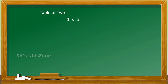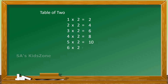2 twos are 4, 3 twos are 6, 4 twos are 8, 5 twos are 10, 6 twos are 12, 7 twos are 14, 8 twos are 16.